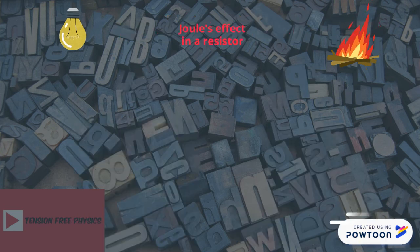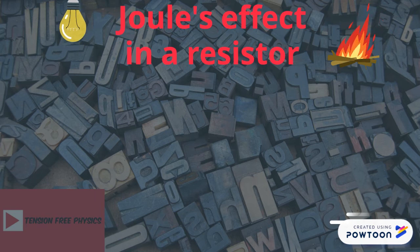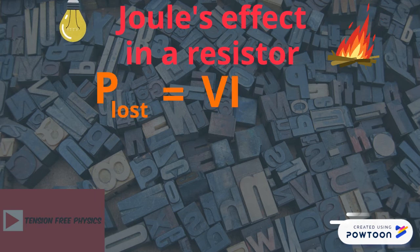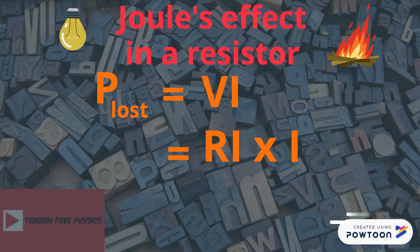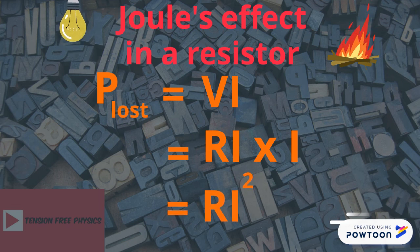Finally, let's find the power lost in a resistor using the formula P = V × I. According to Ohm's law, V = IR. Inserting IR instead of V in the formula, we get P lost = R × I², where R is the resistance of the resistor.